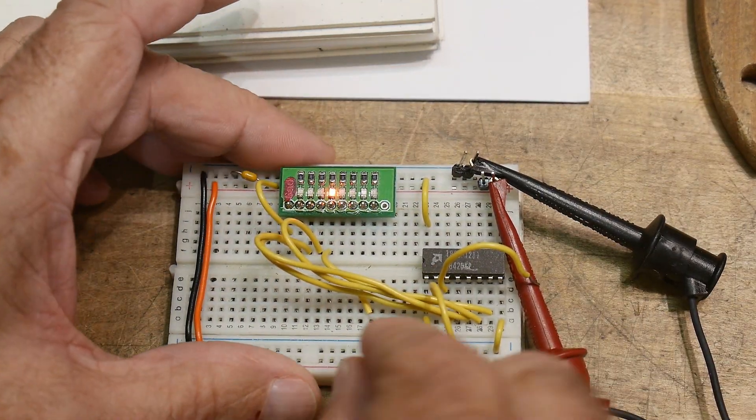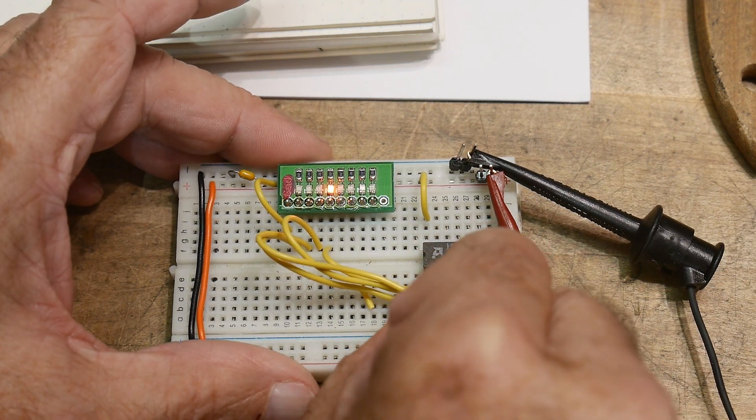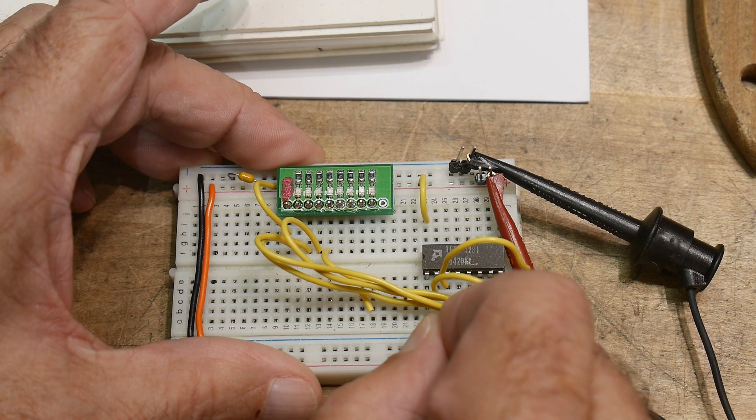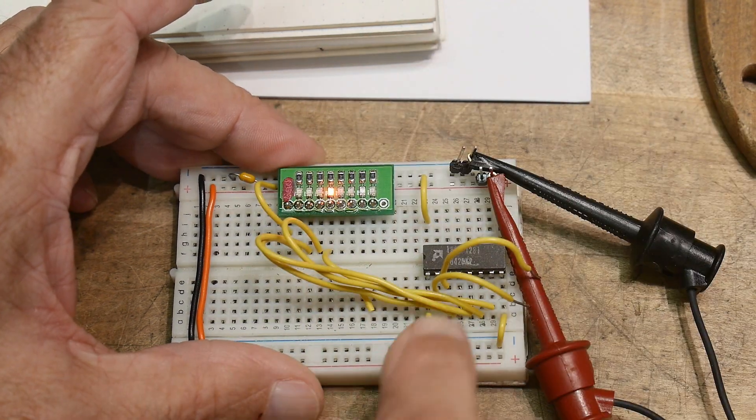And then we have an enable pin, which is down here. And if I disable it, then it doesn't get asserted.